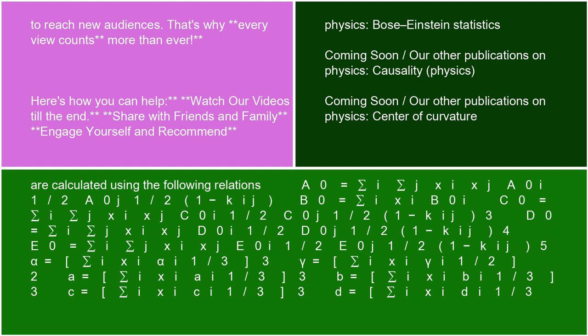3D₀ = Σᵢ Σⱼ xᵢxⱼ D₀ᵢ^(1/2) D₀ⱼ^(1/2)(1-Kᵢⱼ); 4E₀ = Σᵢ Σⱼ xᵢxⱼ E₀ᵢ^(1/2) E₀ⱼ^(1/2)(1-Kᵢⱼ).